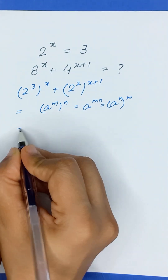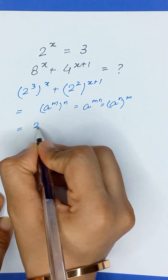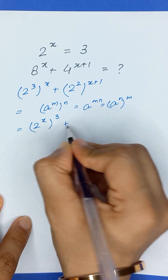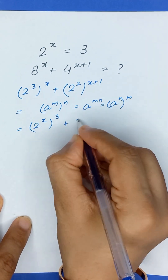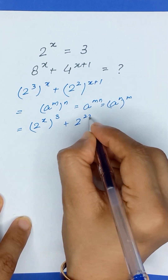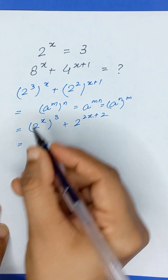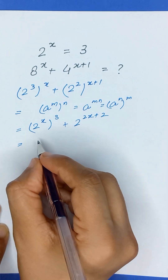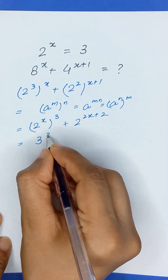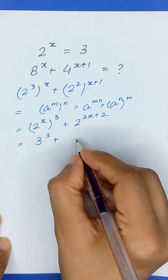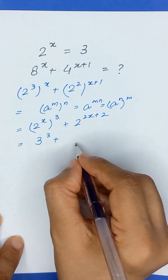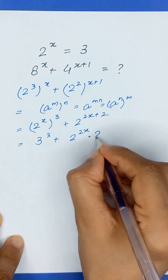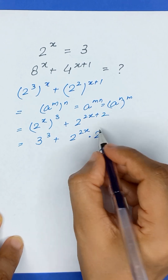So we will exchange the powers here: it becomes 2 to the power x, raised to the power 3, plus 2 to the power 2x plus 2. Since 2 to the power x is equal to 3, it becomes 3 cubed plus 2 to the power 2x times 2 to the power 2.